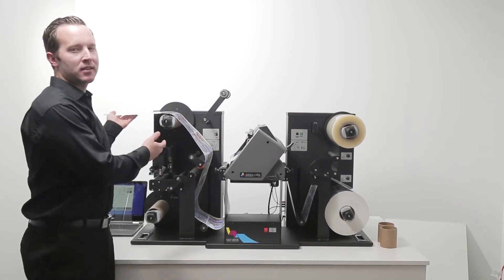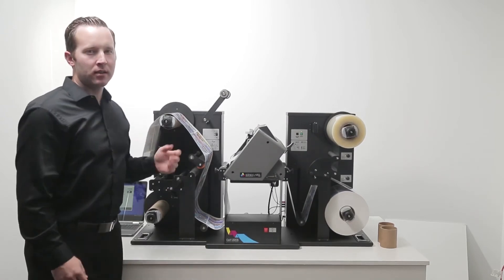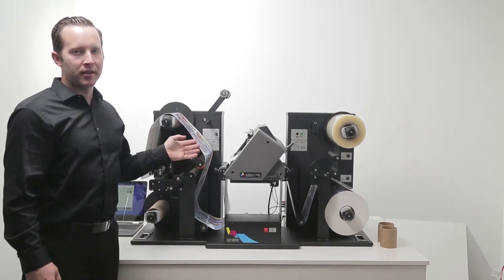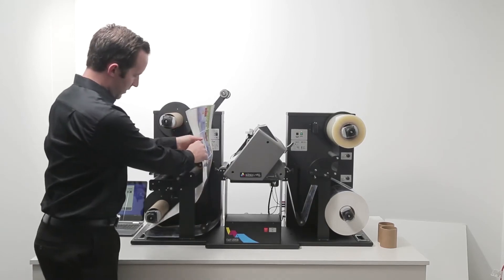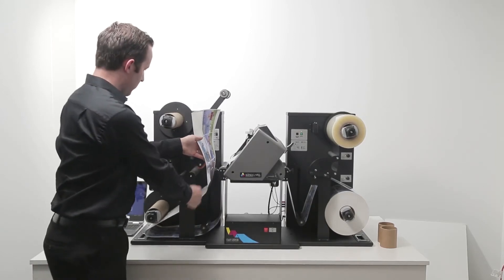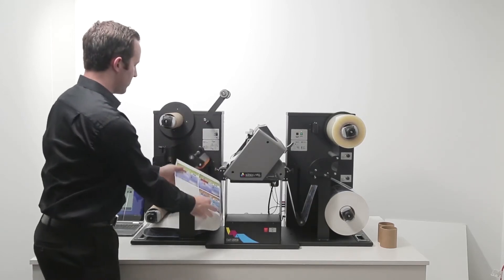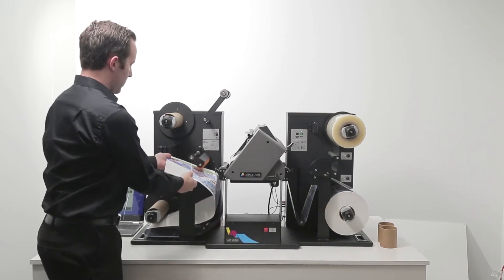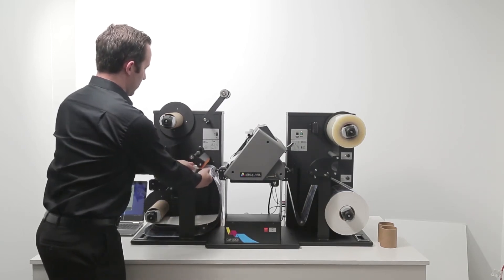Once we've completed our test cuts, we should have enough media to thread past the slitter near the end. We bring the media under the tension arm right here and then we're going to go over the first aluminum roller and under the second aluminum roller.